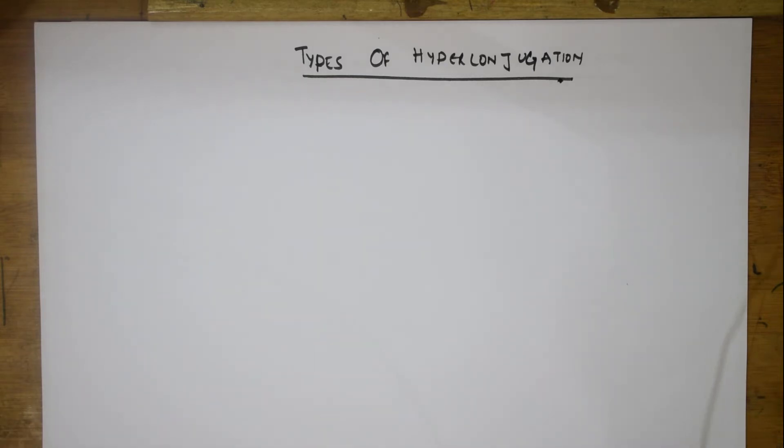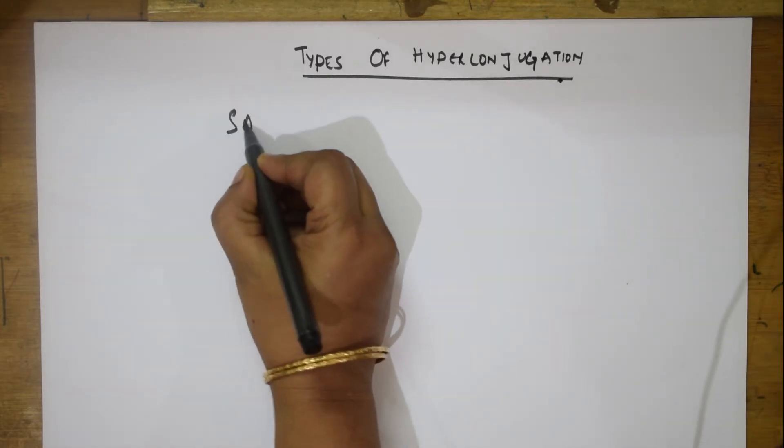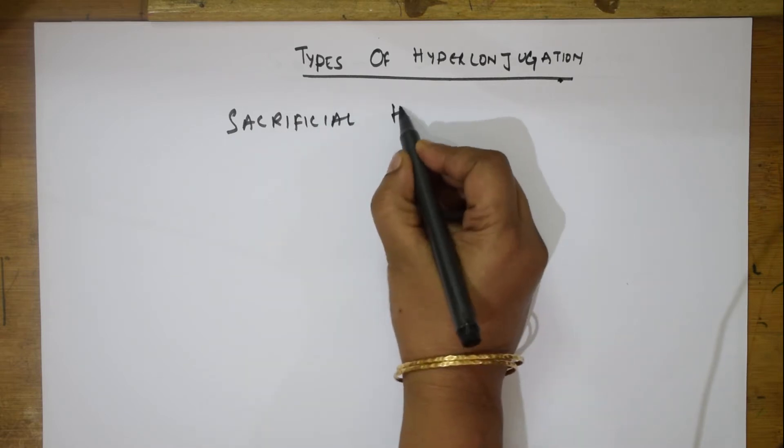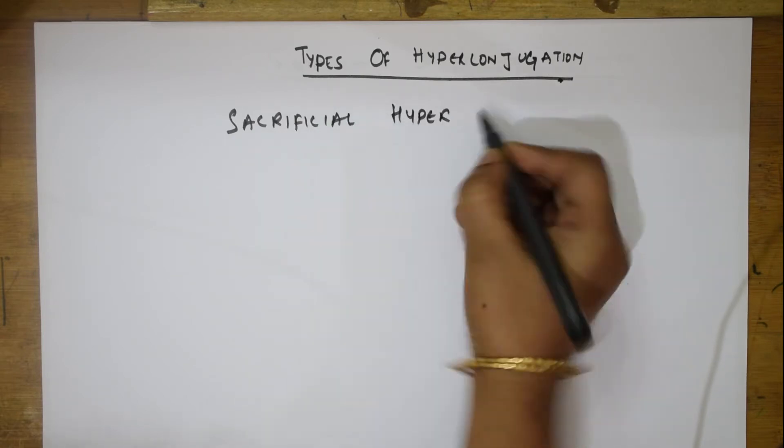What is the first one? The first one is called sacrificial hyperconjugation. Let us write what it is. Sacrificial hyperconjugation.